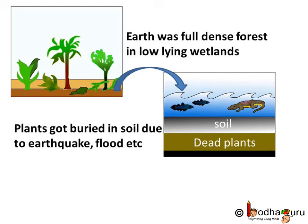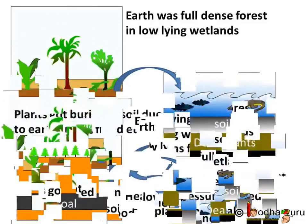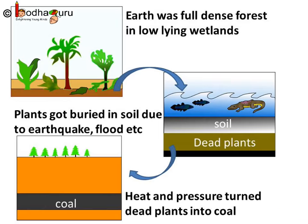Due to natural disasters like flooding and earthquakes, these forests got buried under the soil. More and more soil got deposited on them, mounting up the pressure as they sank deeper and deeper. High pressure and high temperature started converting the dead vegetation into coal. This process is also called carbonization. Since coal was formed from the remains of vegetation, it is also called a fossil fuel.